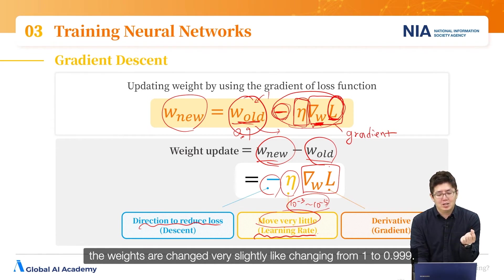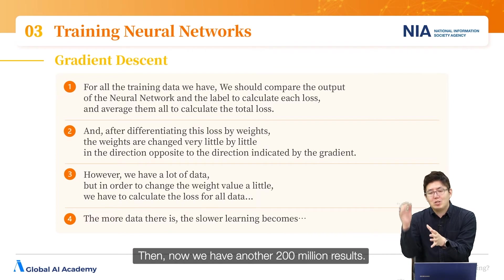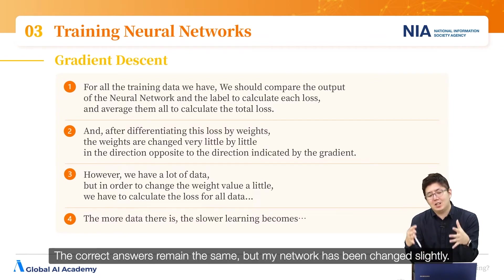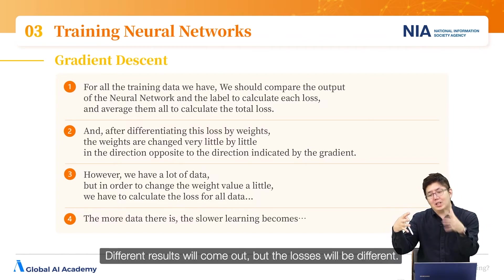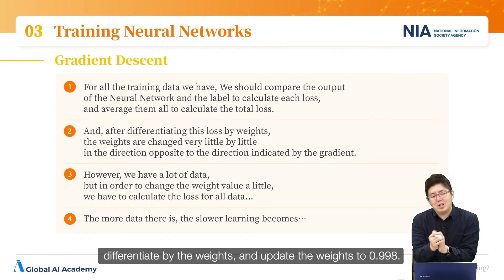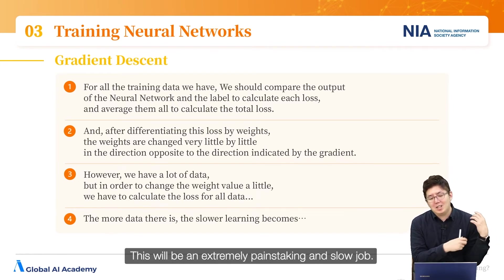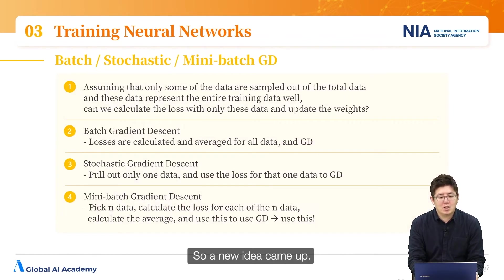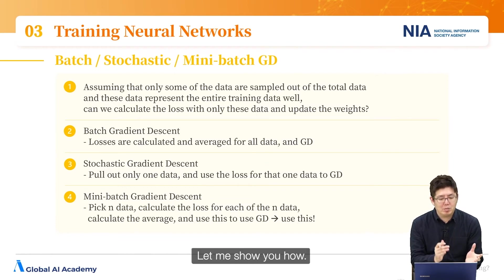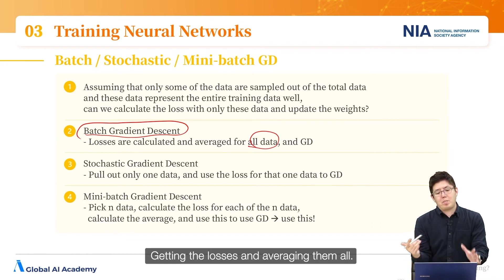We differentiate the averaged losses by the weights and change them very slightly — for example from 1 to 0.999. Then we input all 200 million images again into this newly updated network, get another 200 million results, compare with the correct answers, and compute the losses again. Because the weights have been updated, the losses will be different from the first ones. We repeat this extremely painstaking and slow process. So a new idea came up: instead of using all 200 million images, can we use some of them by sampling? Using all available data like this is called batch gradient descent.